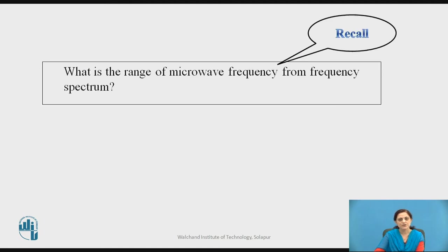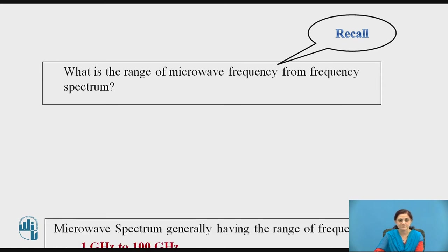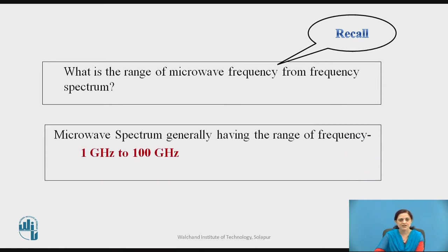Before starting the topic, let us recall the range of frequency used for microwave signals. You can refer to the frequency spectrum. As you know, microwave signals have the highest frequency range. The microwave spectrum generally has a frequency range in gigahertz — generally 1 GHz to 100 GHz is used for microwave signals.